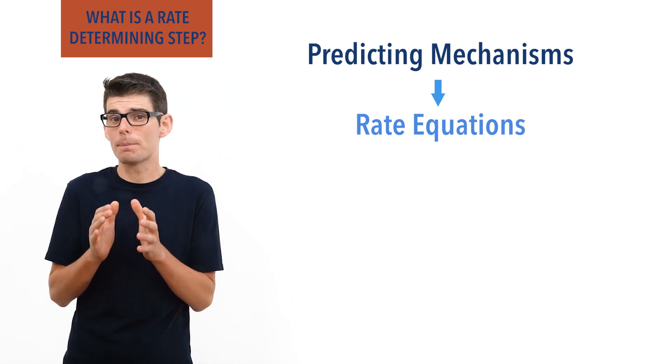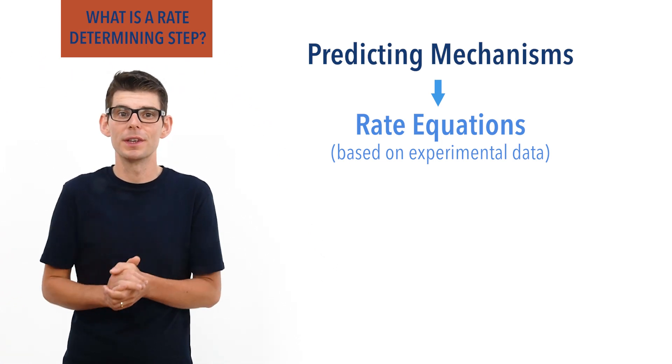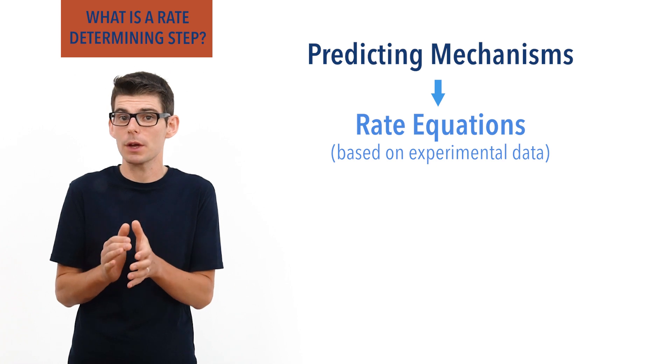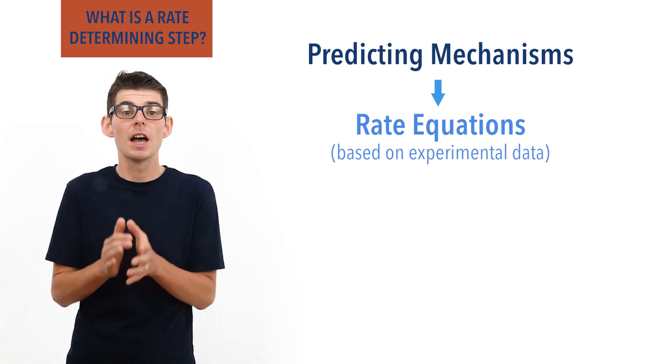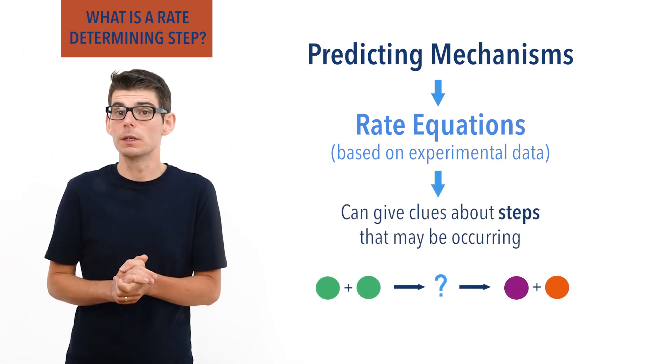Rate equations are based on experimental data, meaning they aren't based on predictions or theory. So if we studied a rate equation for a reaction carefully, we can often find information and clues about the steps occurring in the reaction.